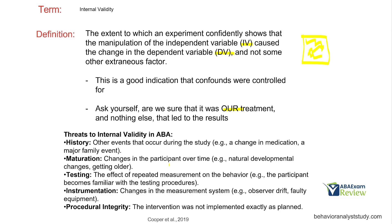Maturation — changes in participants over time. They get older, naturally develop, go through puberty. Testing — the effect of repeated measurements on the behavior; once they become familiar with your reinforcement system, maybe they respond better or worse to it. Instrumentation — did you change how you measured the behavior, either intentionally or not? And then procedural integrity — has the intervention been implemented exactly as planned? If you apply this to real clinical or home-based ABA, these are all things we need to be concerned with.